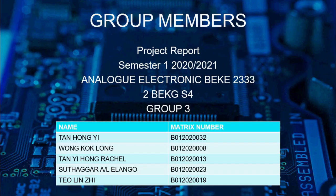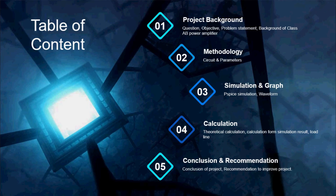Hi, hello and welcome to the video presentation. This presentation is intended for the subject Analog Electronics BEKE 2333. We are Group 3 members from 2 BEKG Section 4. This presentation consists of five major parts: the first part is project background, second is methodology, third is simulation and graph, fourth is calculation, and fifth is conclusion and recommendation.